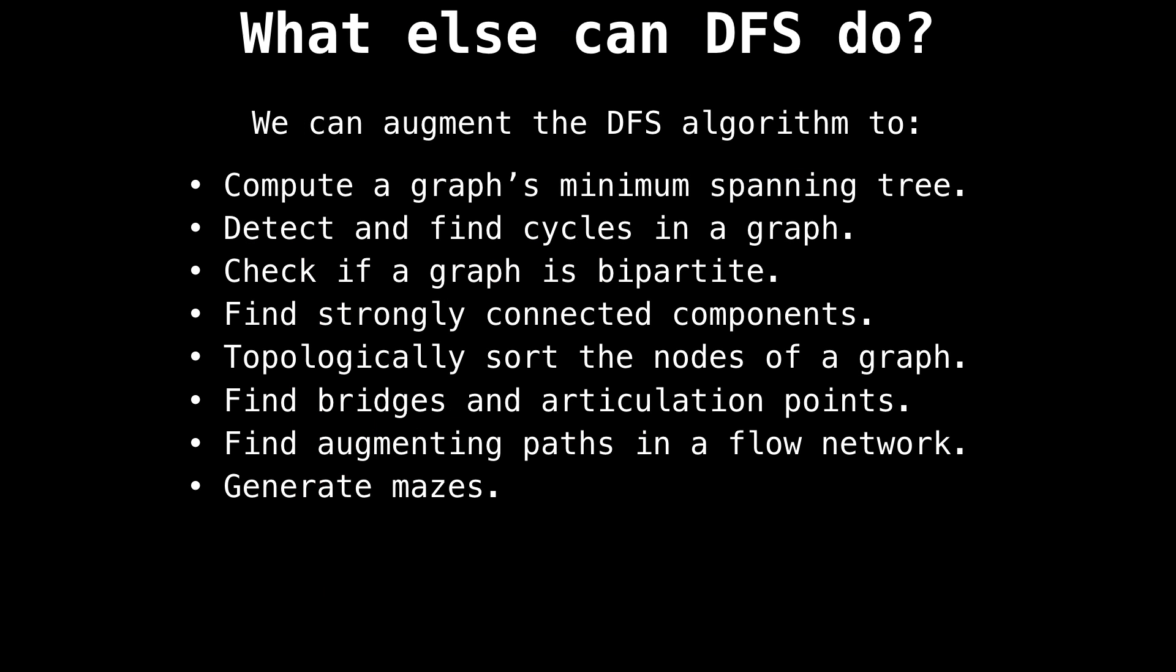So we've covered two of the things you can use the depth first search for: doing a simple traversal and determining connected components. But we can augment a depth first search to do so much more, such as compute a graph's minimum spanning tree, detect and find cycles in a graph, check if a graph is bipartite, find strongly connected components, topologically sort your graph, find bridges and articulation points, find augmenting paths in a flow network, generate mazes, and many, many more applications. So a depth first search is super versatile and can be extended to do a whole ton of things.